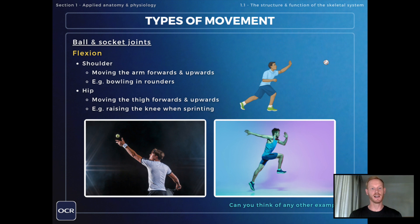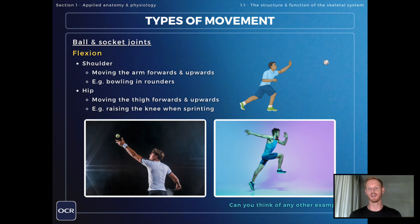At the shoulder, flexion involves moving the arm forwards and upwards, for example underarm bowling in rounders. At the hip, it involves moving the leg or the thigh forwards and upwards, for example raising the knee when sprinting.